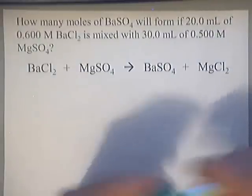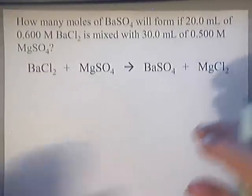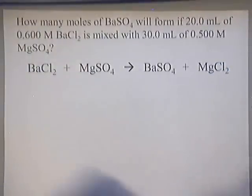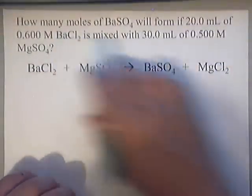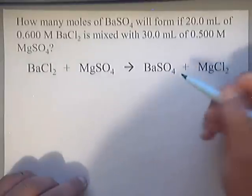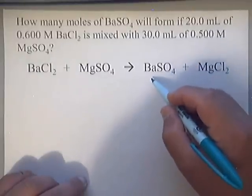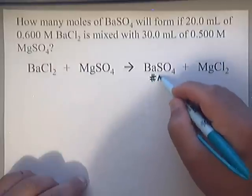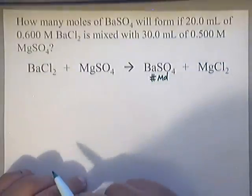So you work this just like you would all the others that we've worked in the past. Label all your given information. They want us to find how many moles of BaSO₄. So underneath the BaSO₄ I'm going to write number sign and write moles because that's what they're asking me to find.